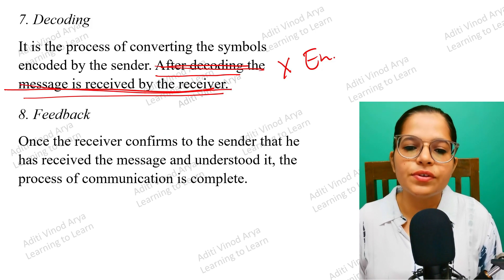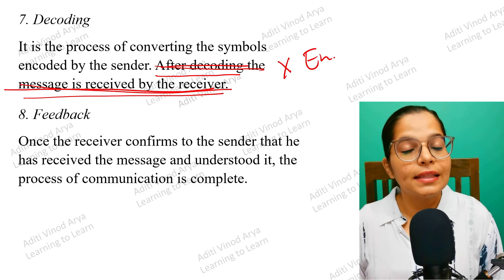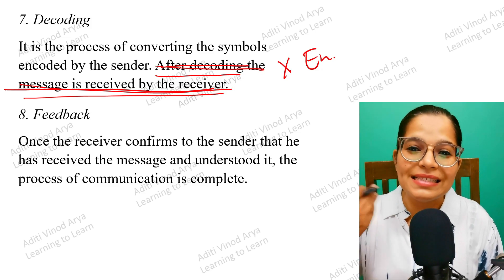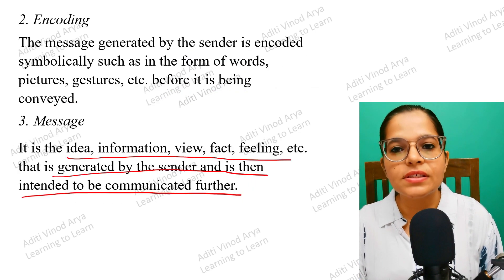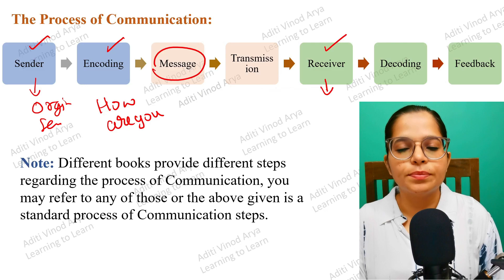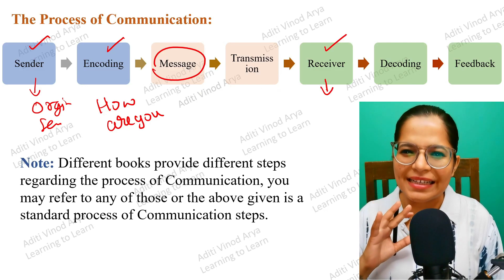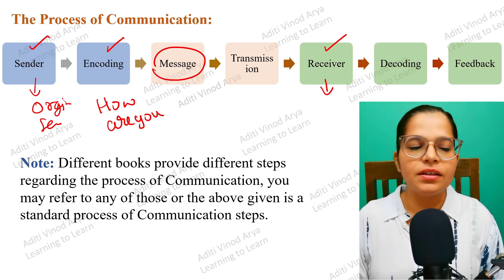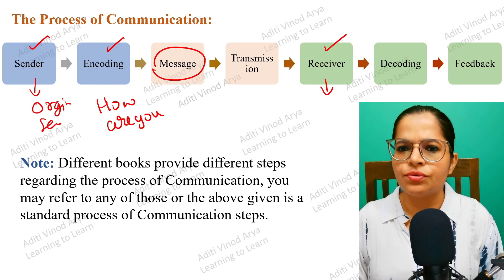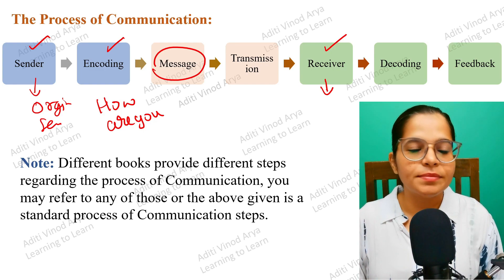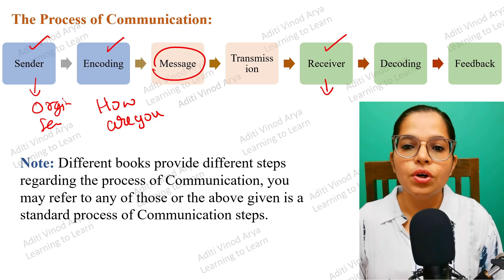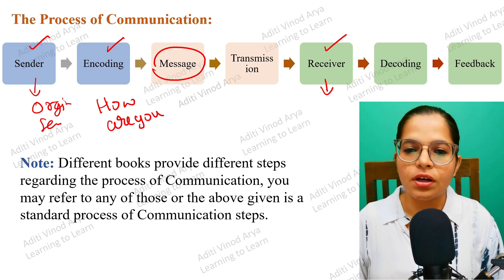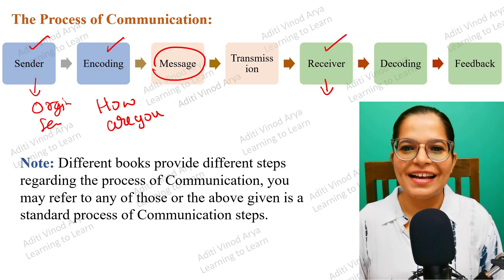Feedback is the final step: once the receiver confirms to the sender that they have received and understood the message, and provides their response — that is Feedback. This completes the entire process of communication. I hope you have understood all the steps in detail. If there are any doubts, please let me know. In the next lecture we will cover types of communication. Take care and study hard!